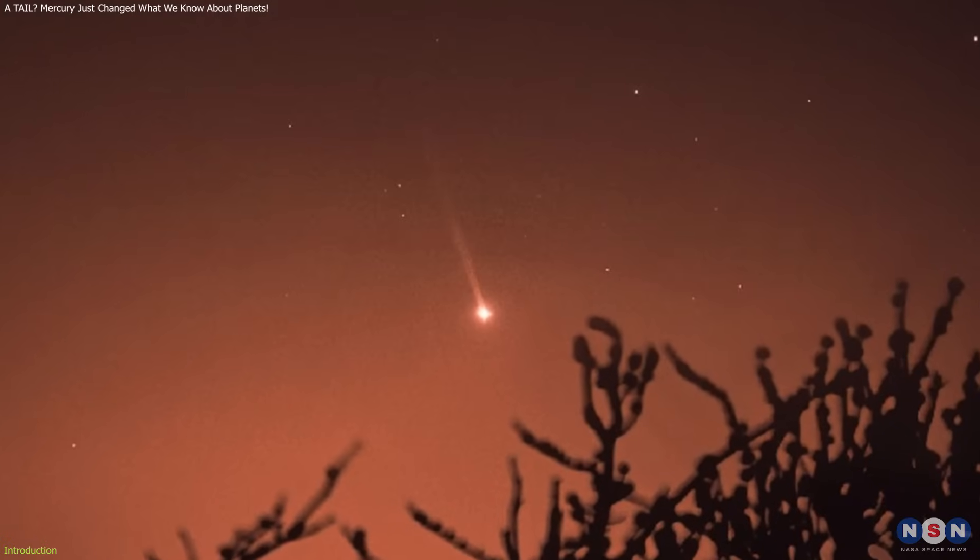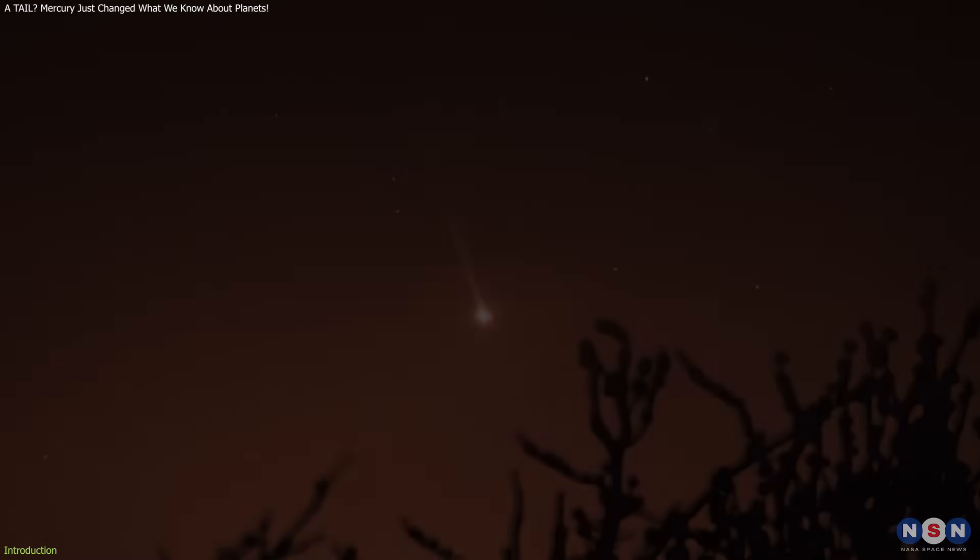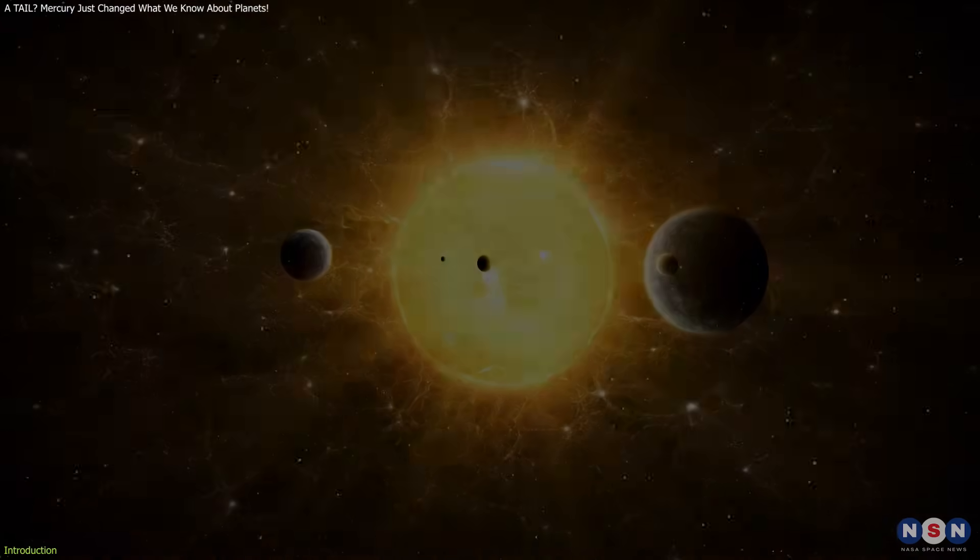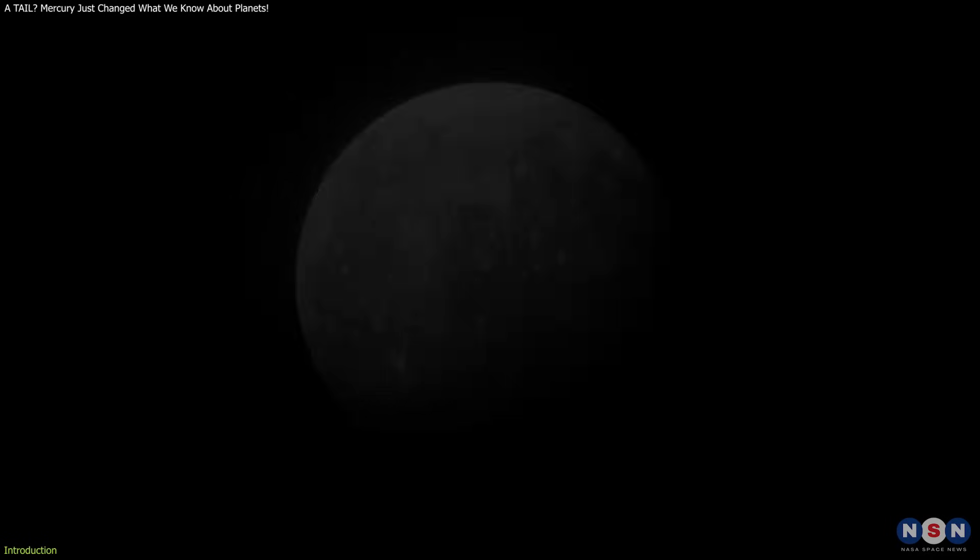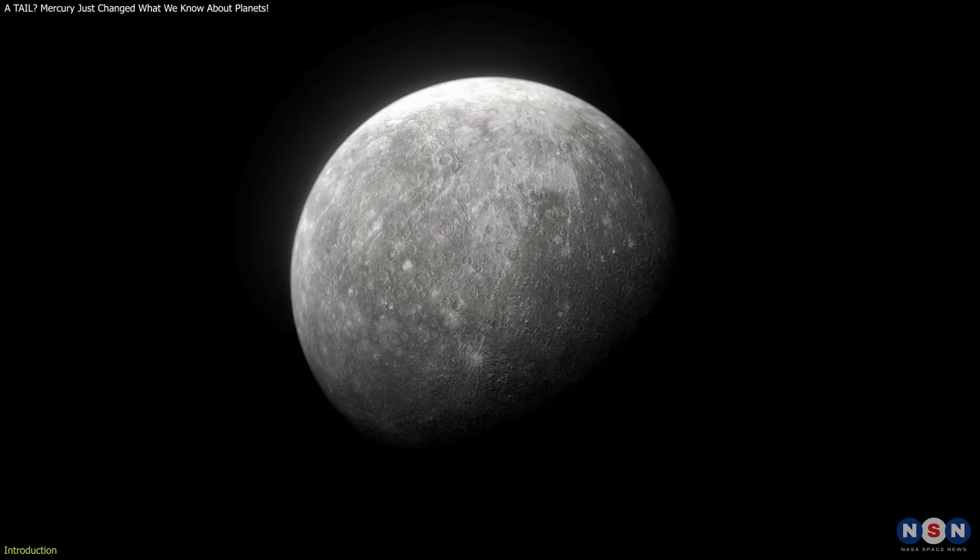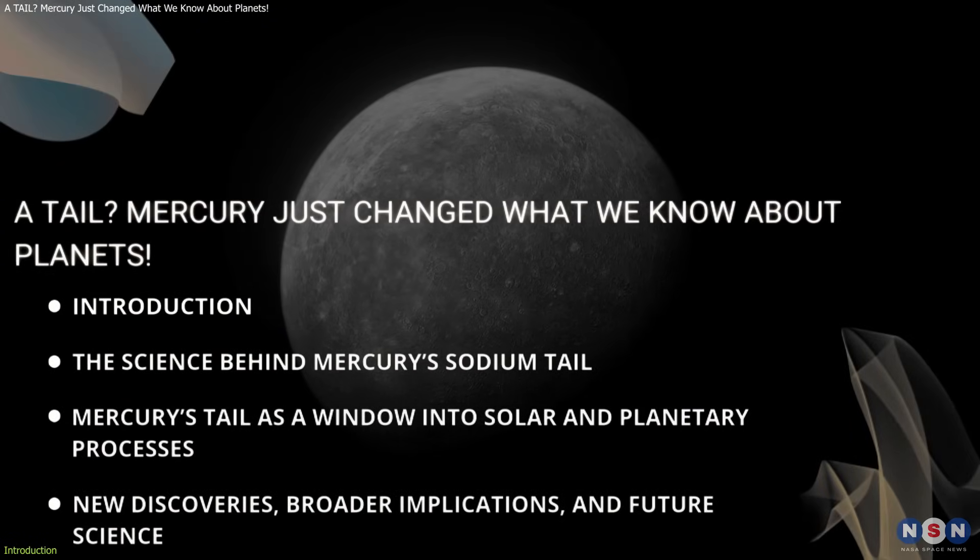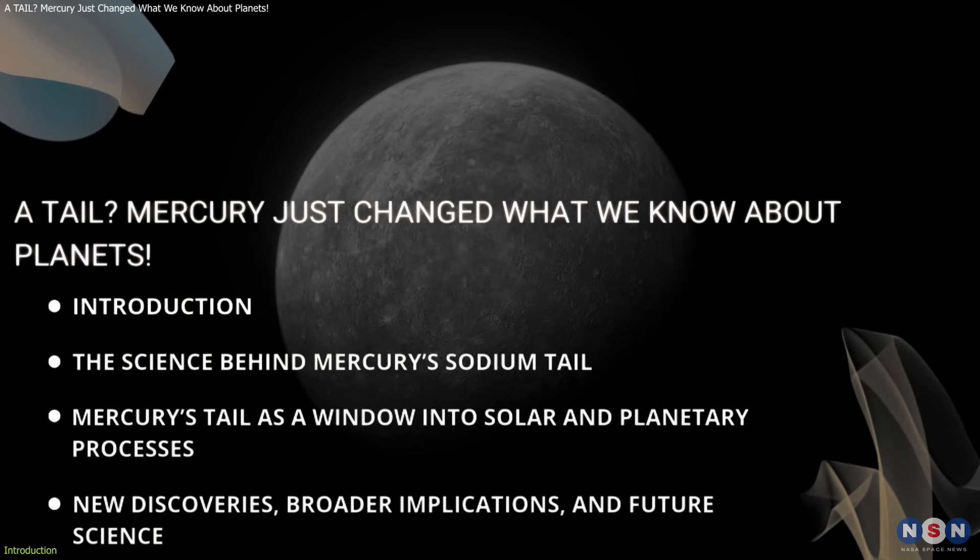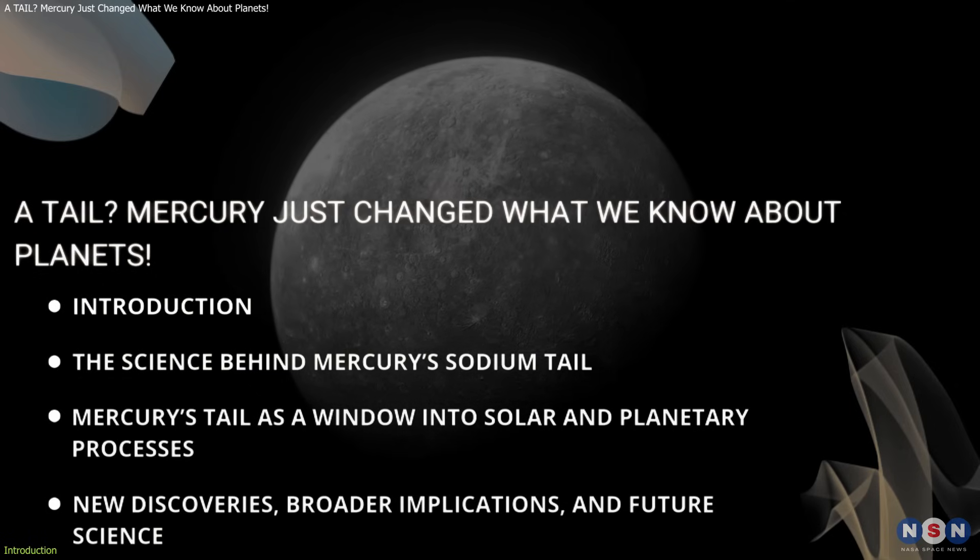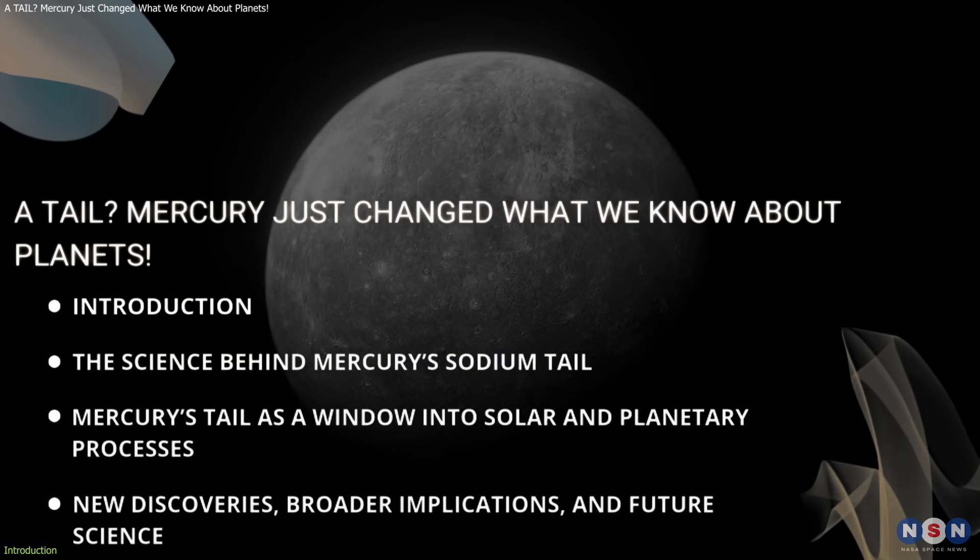And this isn't just a one-time event, it's happening regularly, triggered by solar activity, micrometeoroids, and the planet's extreme conditions. In this video, we're going to break down exactly what Mercury is releasing, how scientists found out, what's causing it, and why it matters.